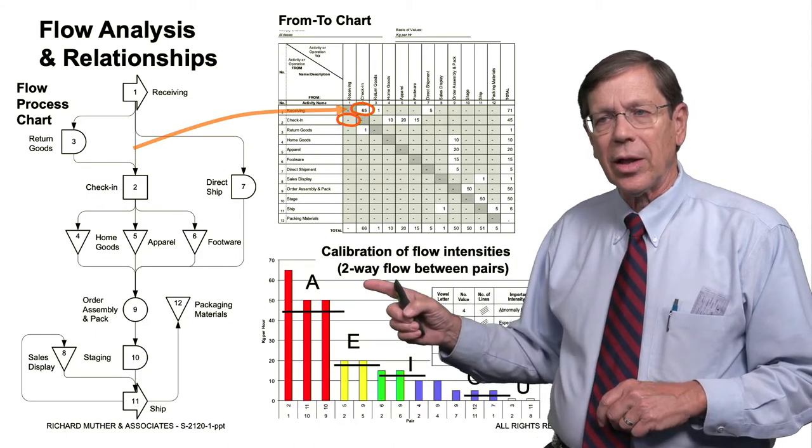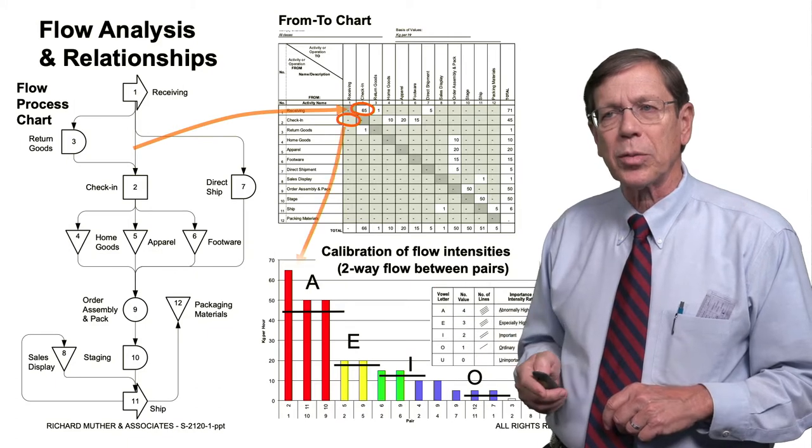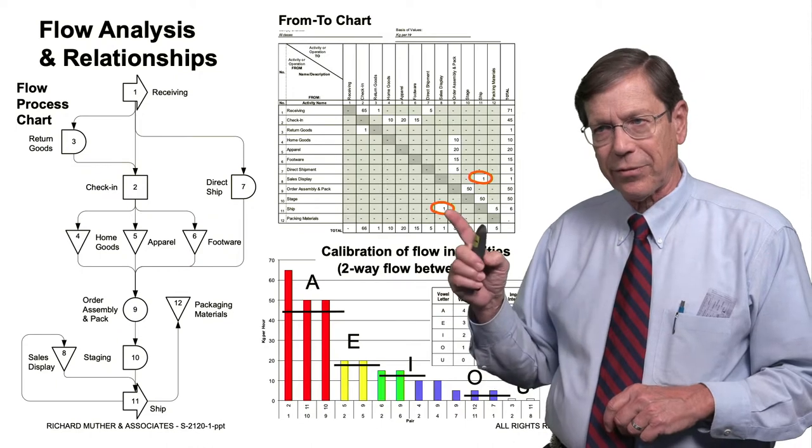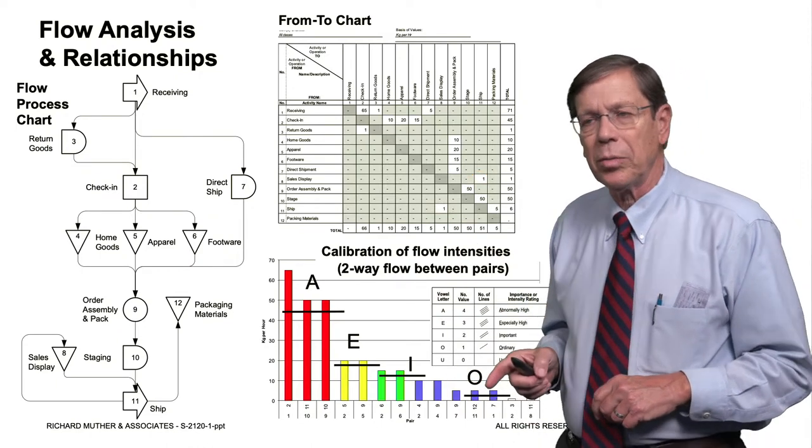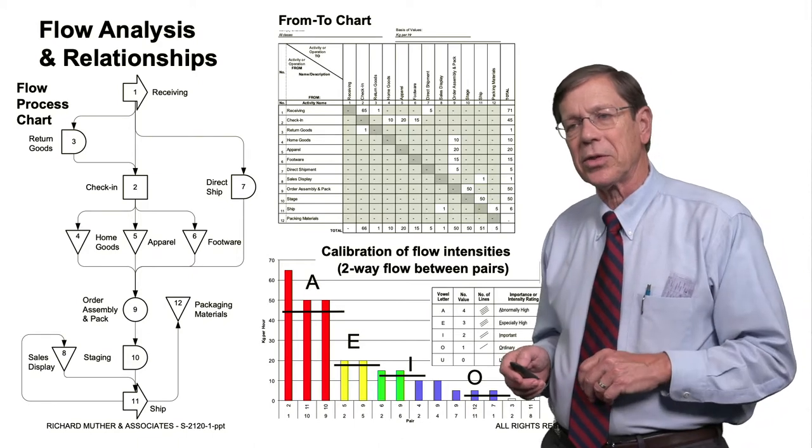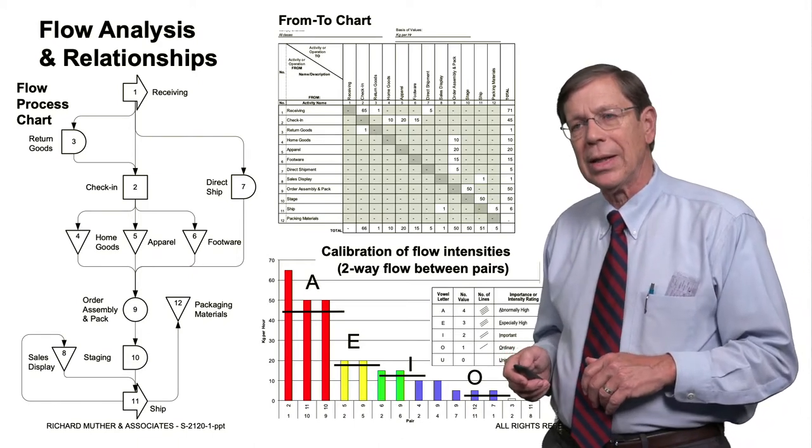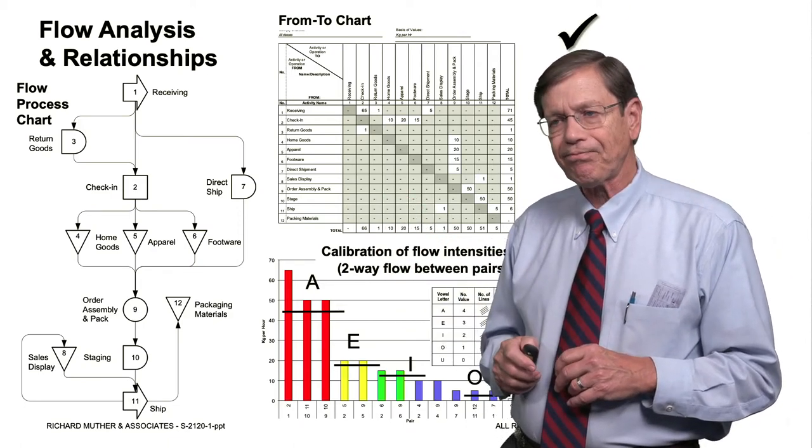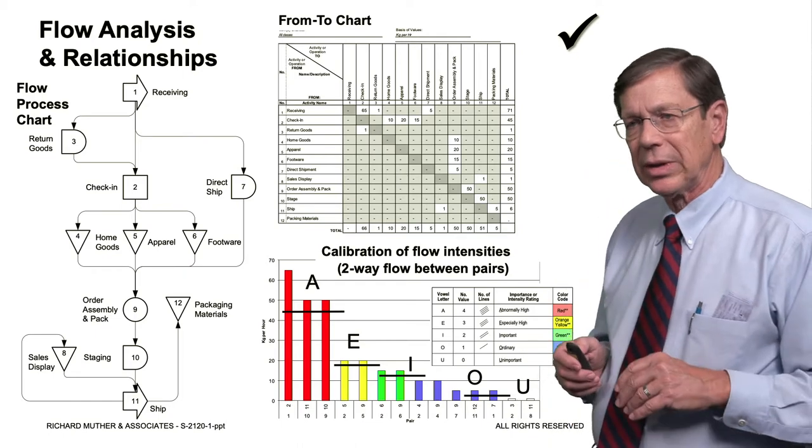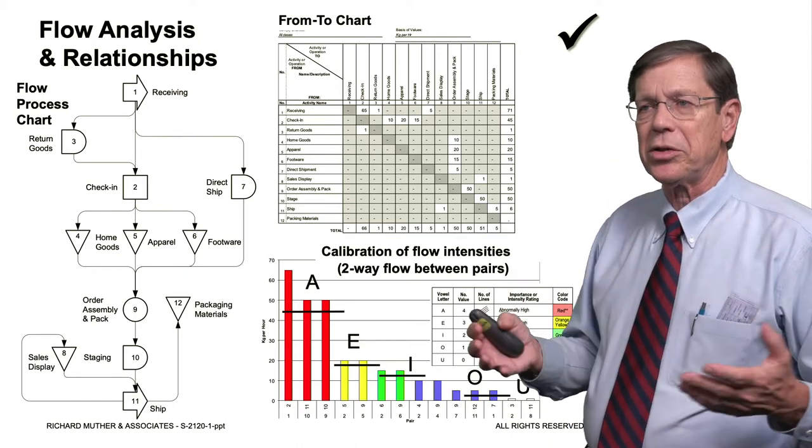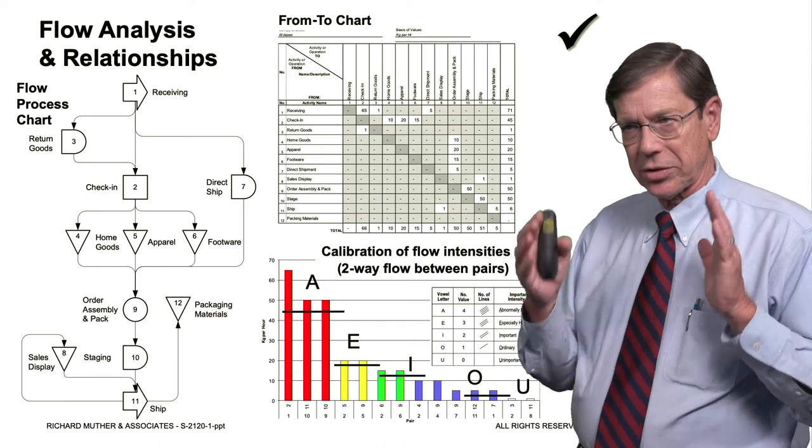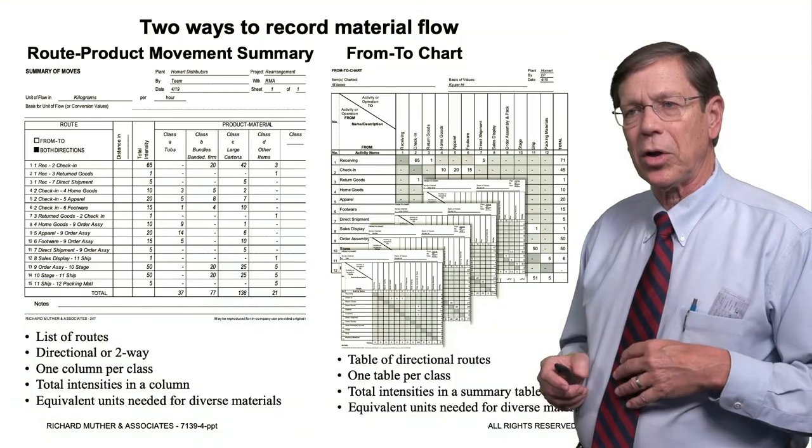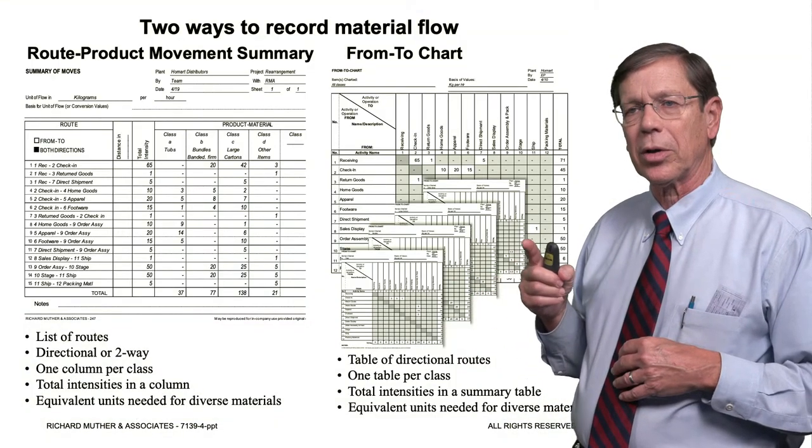The movement summary last session didn't have that problem, but this one does. So it says here, calibrate the two-way flows between activity pairs. You always have to look and see if there's any backflow and then add that before you plot the chart. In SLP, this document is preferred to the movement summary. The movement summary is easier for me to take you through that exercise because everything's on one table. In the from-to chart, if you have multiple classes, you need one table per class.